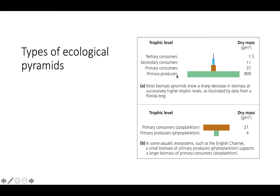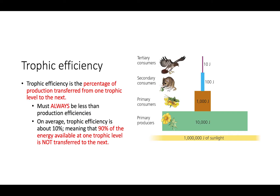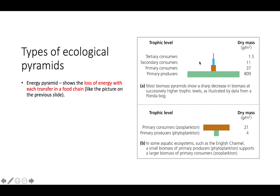There are a couple different types of ecological pyramids. One is the energy pyramid, like this one, which shows the amount of energy that goes from one trophic level to the next. It will again show the loss of energy with each transfer in the food chain.